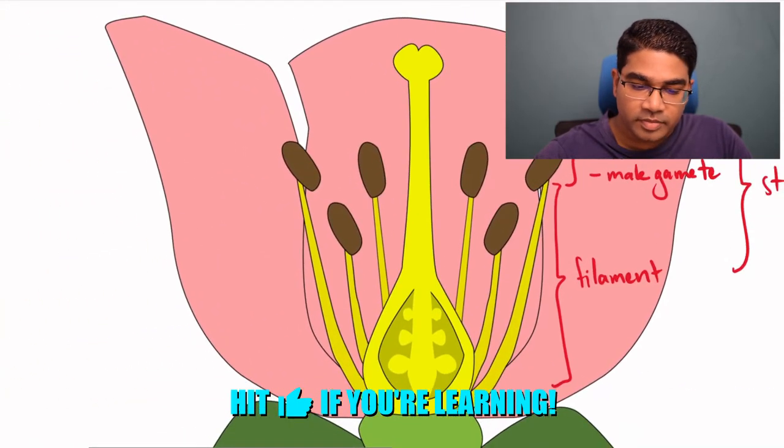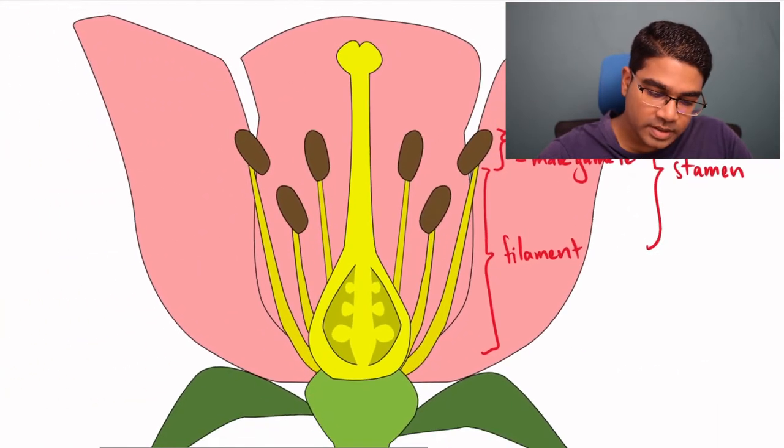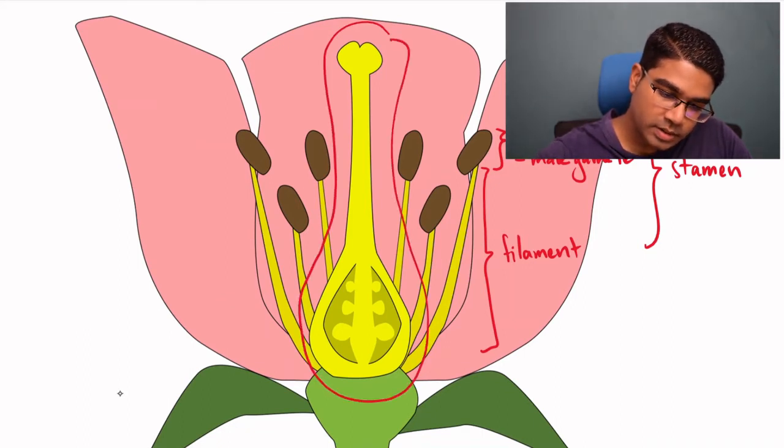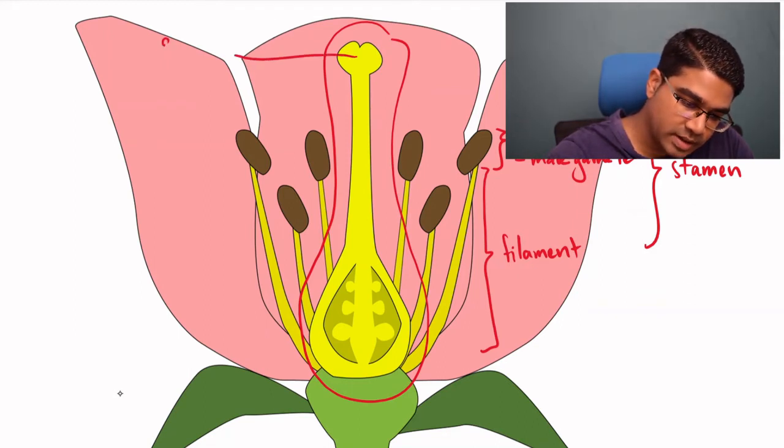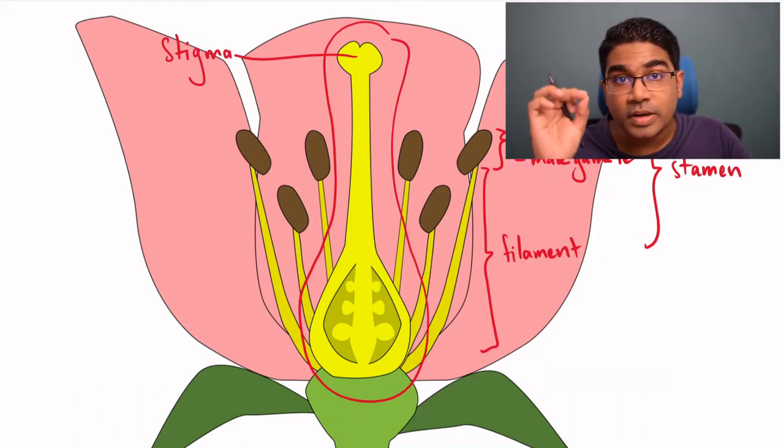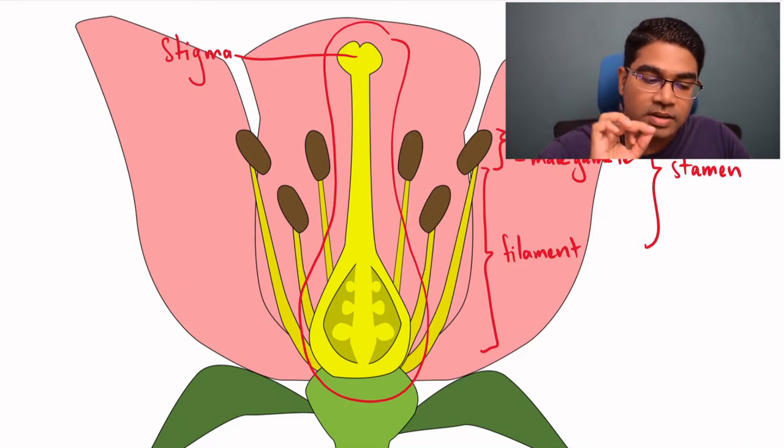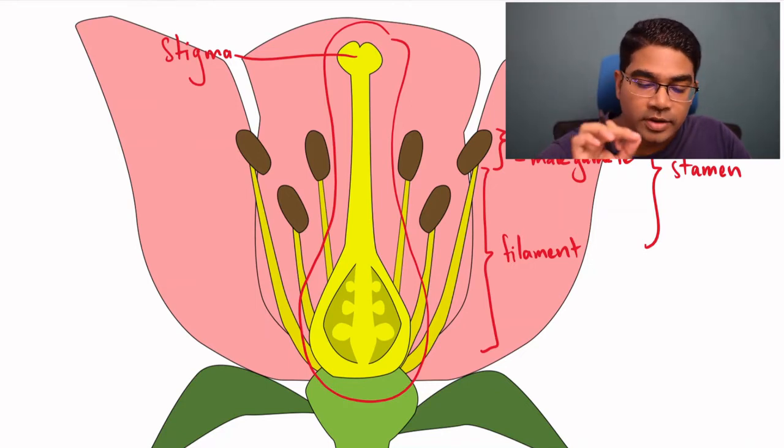So let's look at the female reproductive part. The female reproductive part is this middle structure right here. It consists of three parts. The first part right on top, this is known as the stigma. The stigma is the sticky part which allows the pollen grain to land. So the function of the stigma is the site for the pollen grain to land during pollination.